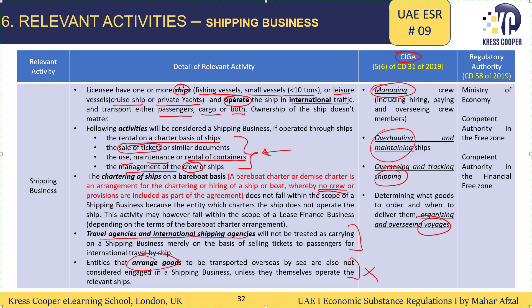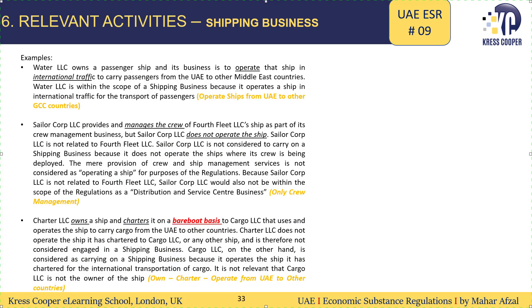If these activities are happening in the UAE, then we will say that the CIGA test is being met. The regulatory authorities are: the Ministry of Economy, the competent authority in the free zone, and the competent authority in the financial free zone. Now we will look into the examples given in the guide.